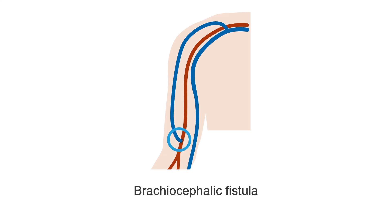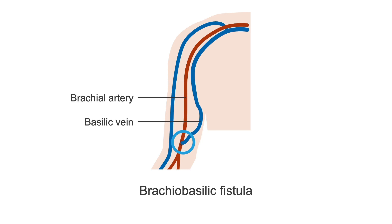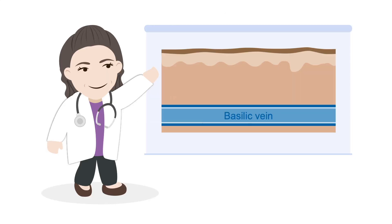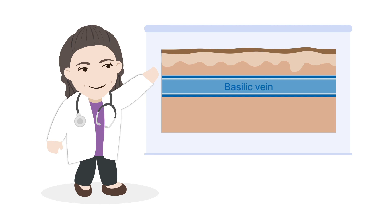The second easiest option is a brachiocephalic fistula, which uses the brachial artery and the cephalic vein in the upper arm. If this is not possible, then a third option is a brachiobasilic fistula, which connects the brachial artery to the basilic vein in the upper arm. Remember that this type of fistula needs to be performed with a transposition to lift the basilic vein to a more superficial position.